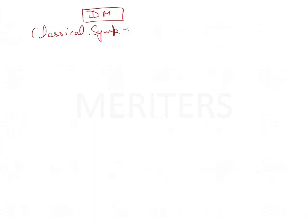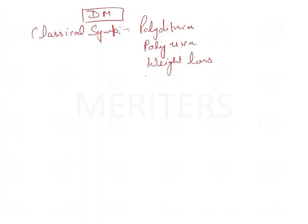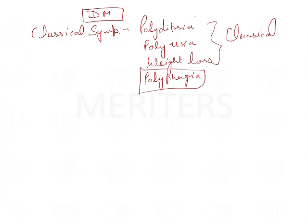What are those classical symptoms? They are polydipsia, polyuria, weight loss, and polyphagia. The first three are considered the classical symptoms. Polyphagia is sometimes excluded because it is not measurable — you cannot quantify how much food the patient has taken. Polydipsia can be measured in glasses or liters of water, polyuria by urine output, and weight loss is also measurable.